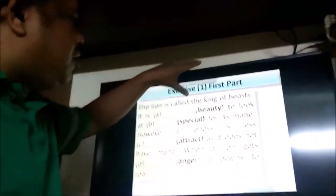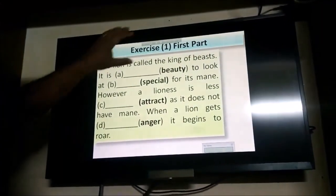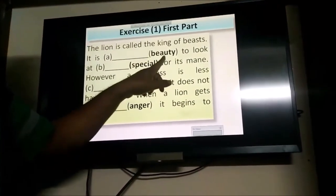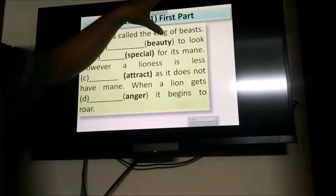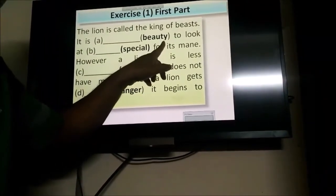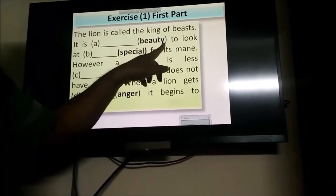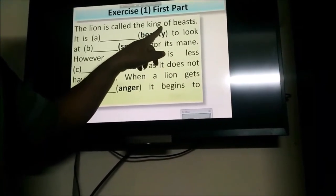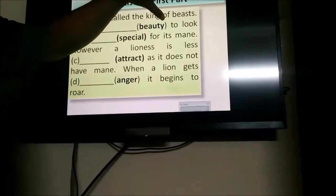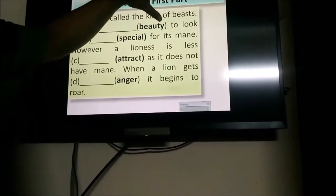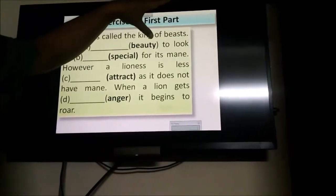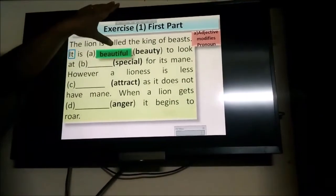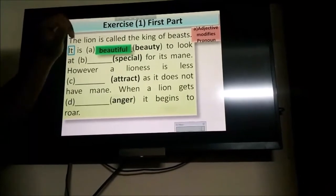The lion is called the king of beasts. It is beauty to look at. Beauty is given here as a noun. You have to turn this into an adjective and for turning it into an adjective, F-U-L will be added. F-U-L is obviously a suffix. And when you add F-U-L and turn it into an adjective, you know that adjective modifies a noun and you get the answer beautiful.